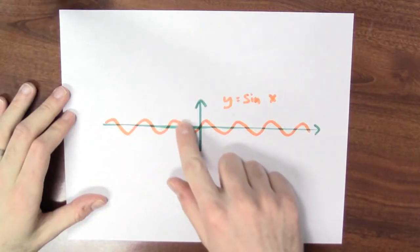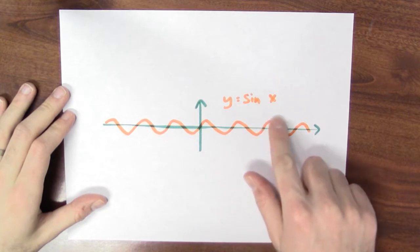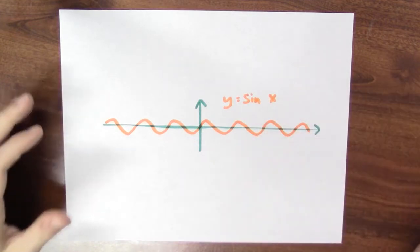Sine is a periodic function. The graph of sine just wiggles up and down forever and ever. Let's try to get a sense as to why this is the case. Why does the graph of sine look like this? Why is sine moving up and down?